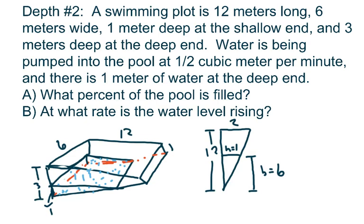Hi, everyone. A swimming pool is 12 meters long, 6 meters wide, and 1 meter deep at the shallow end, and 3 meters deep at the deep end. Water is being pumped into the pool at 1.5 cubic meters per minute, and there's 1 meter at the deep end.